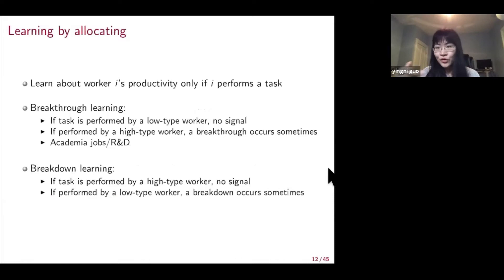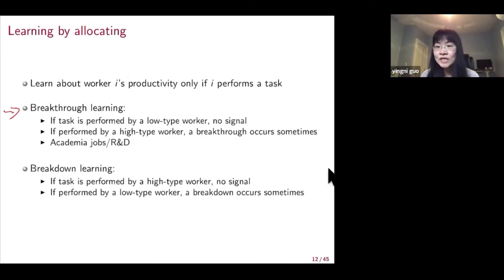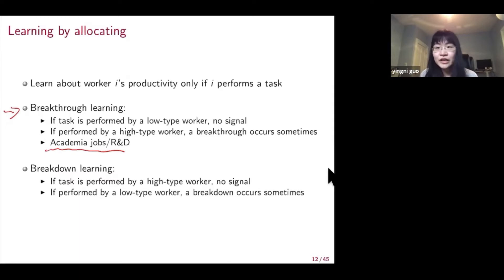We assume that the employer learns about the worker's productivity only if worker i performs a task — as in the surgery example, the employer learns about a surgeon's ability only if the surgeon performs a surgery. We contrast two different employer learning environments. The first is breakthrough learning. In this environment, if the task is performed by a low type worker, nothing happens — you don't see any signal. But if the task is performed by a high type worker, a breakthrough sometimes will occur. The best example for this audience is academia jobs: an incapable researcher will not generate a breakthrough, but a capable researcher might be unlucky and is not guaranteed to generate a breakthrough.